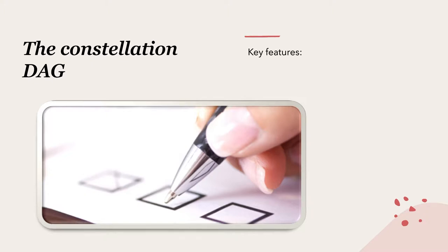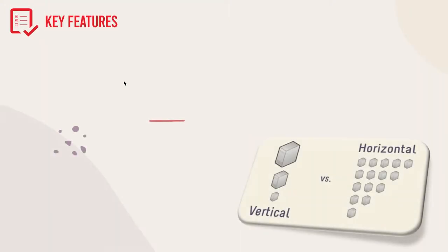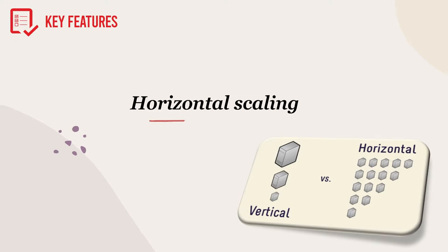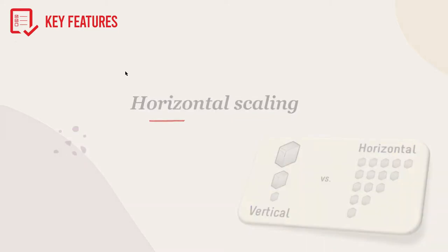The paper begins with an overview of Constellation's key features, so let's go through it together. There is horizontal scaling, which means that the more nodes join the network, the quicker the network becomes.